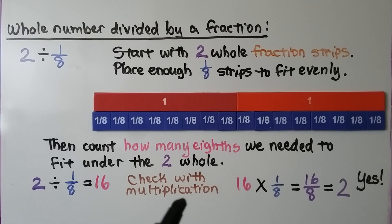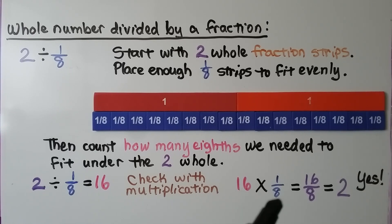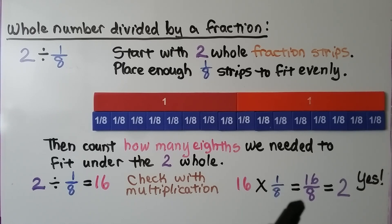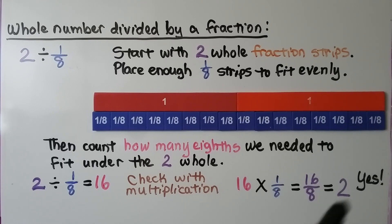We can check it with multiplication: sixteen times one-eighth equals sixteen-eighths, which is equal to two whole, so yes, it's correct.